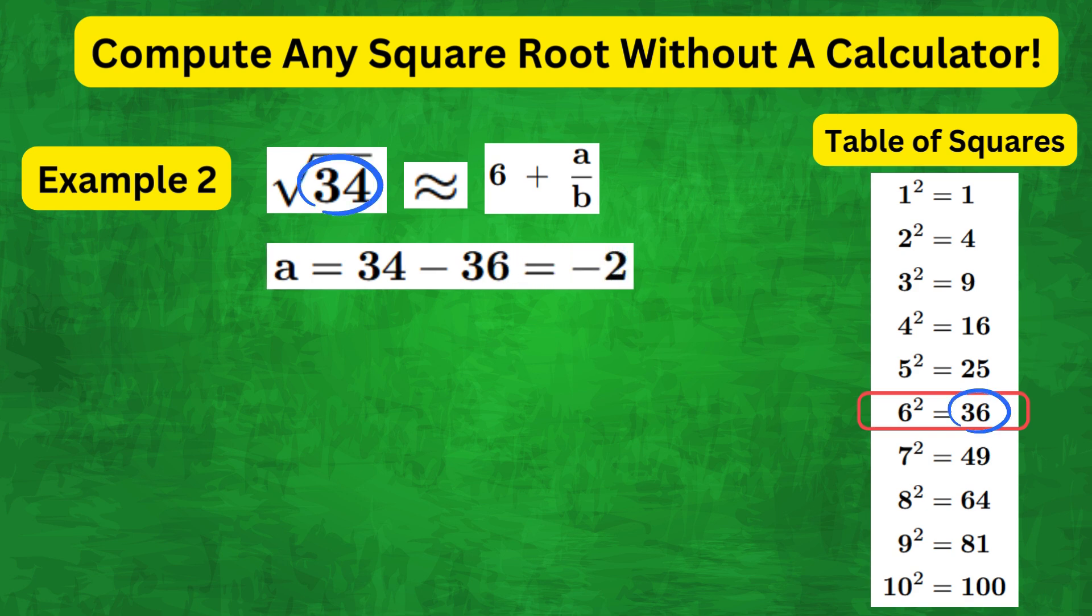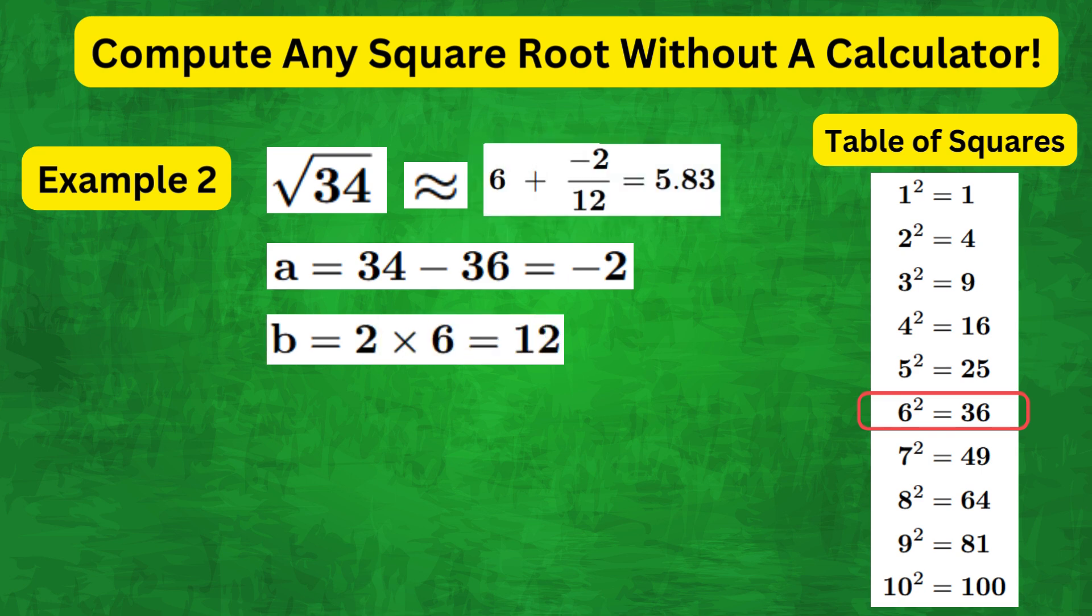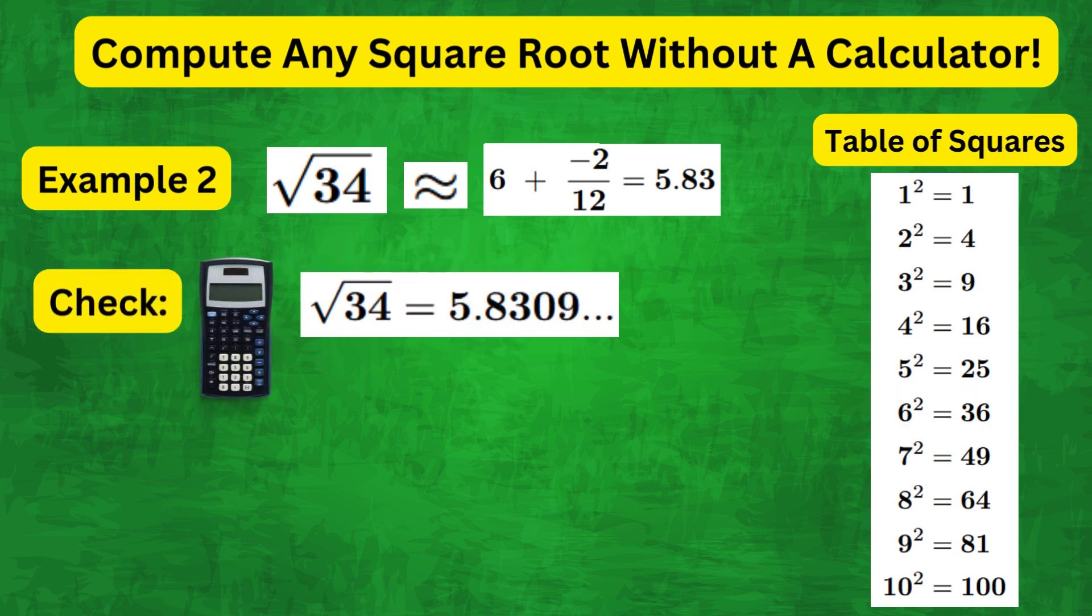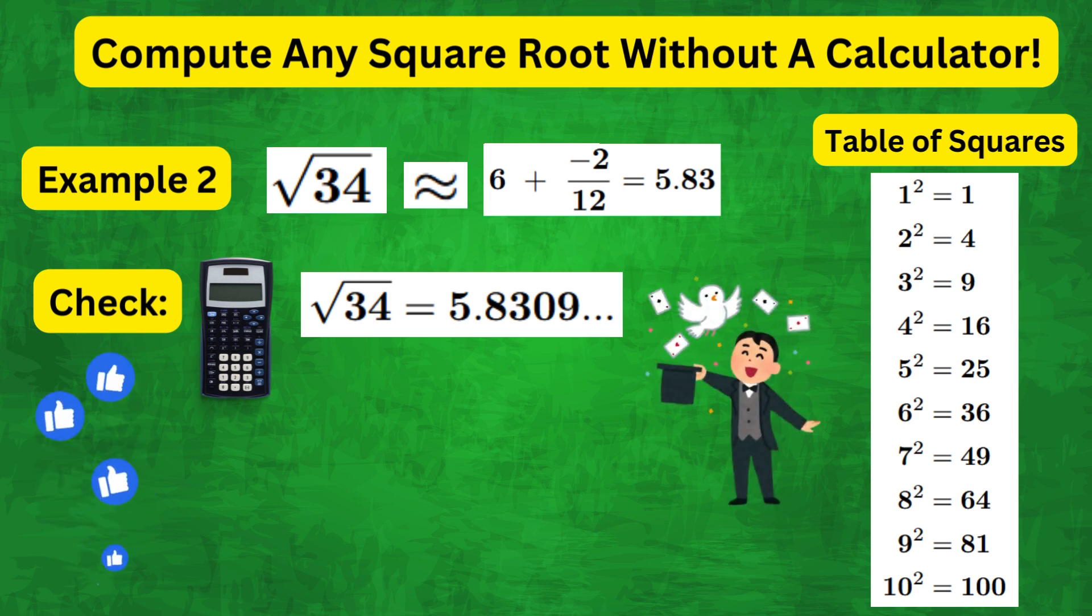And the denominator, as before, is simply 2 times 6, which is 12. This works out as 5.83. And using a calculator, the actual value is 5.8309. So, we are accurate to two decimal places.